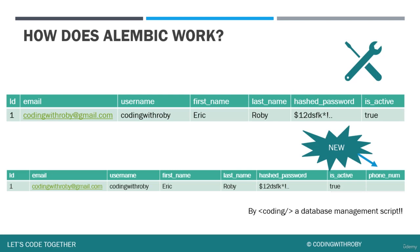Now, making a new database column can include risk that we will define later on in this section. For example, what if we do not want this field to be null, or what if we already have some data available for some users? This could all be extremely risky when dealing with the database. As the saying goes, with great power comes great responsibility. But for real, you can really mess up your application upgrading your database and changing columns. However, Alembic allows us to keep track of the changes we make, so you can always downgrade your database back to its original form. This makes Alembic significantly more safe for use.